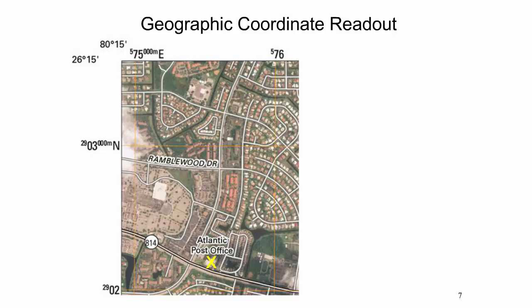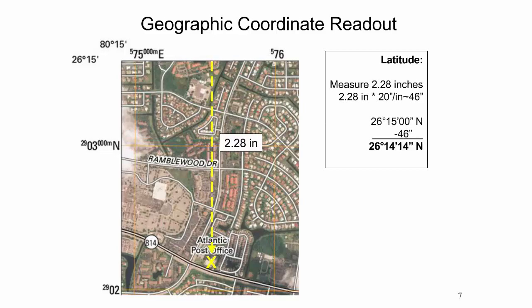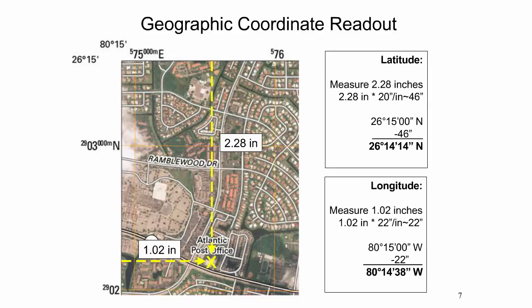The northwest corners of the map are the closest reference to the latitude and longitude Graticule. For latitude, a map distance of 2.28 inches is measured between the top edge of the projection line and the post office, giving 46 seconds of latitude. This value is subtracted from the 26 degrees 15 minutes northern latitude of the reference grid line, since the post office is located south of that line. For longitude, a map distance of 1.02 inches was measured from the left projection line to the post office, translating to 22 seconds of longitude. Subtracting from 80 degrees 15 minutes gives the final western longitude, since the post office is east of the reference line.